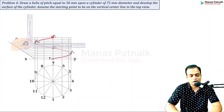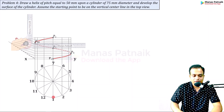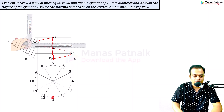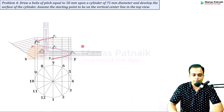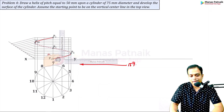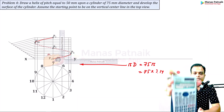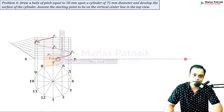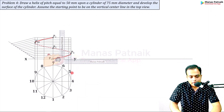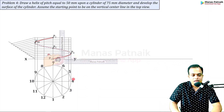The next task is to create the development. We are going to cut it open from the front and lay it absolutely flat. When you cut it open, the width is equal to π×d. What is π×d? This is 75×π = 235.62 mm. Make a line equal to π×d = 235.62 mm. As you can see, this length is 235.62 mm.